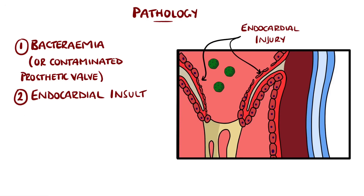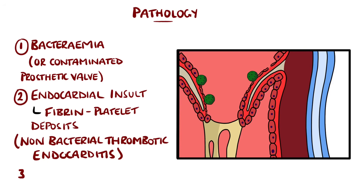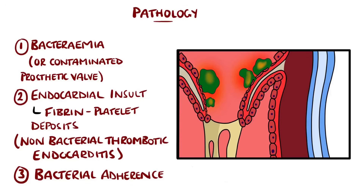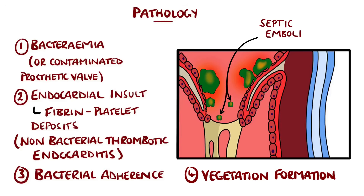This injury causes formation of fibrin platelet deposits, termed non-bacterial thrombotic endocarditis, to which bacteria are able to adhere and to proliferate, forming a vegetation that is then covered by a biofilm, protecting it. Particles from the vegetation can also detach and travel along the bloodstream, forming septic emboli, and therefore can affect other organs.